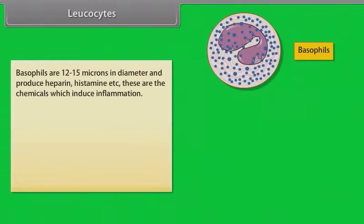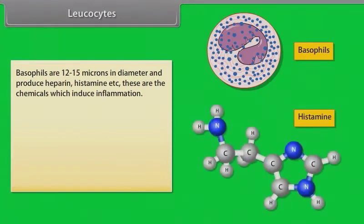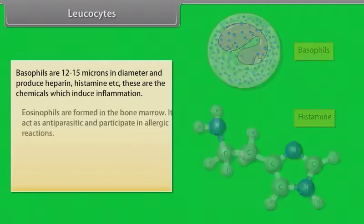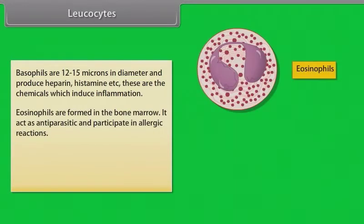Basophils are 12 to 15 microns in diameter and produce heparin, histamine, and other chemicals which induce inflammation. Eosinophils are formed in the bone marrow; they act as anti-parasitic agents and participate in allergic reactions.